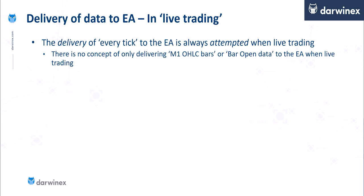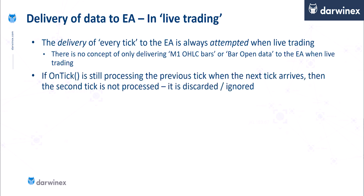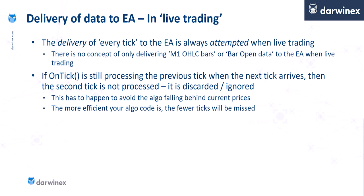Remember there's no concept of delivering M1 OHLC bars or open bar data to the EA in live trading — they are just data constructs for the purposes of backtesting. If the OnTick function is still processing the previous tick when the next one arrives, that second tick will not be processed; it gets discarded. And if you think about it, this has to happen to avoid the algo falling behind current prices. However, the more efficient your code is and the quicker OnTick is processed on each iteration, the fewer ticks will be missed.